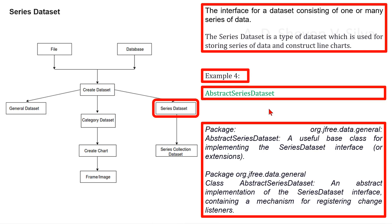AbstractSeriesDataset is in package org.jfree.data.general — a useful base class for implementing the series dataset interface or extensions. It is an abstract implementation of the series dataset interface containing the mechanism for registering change listeners. This class extends AbstractDataset.